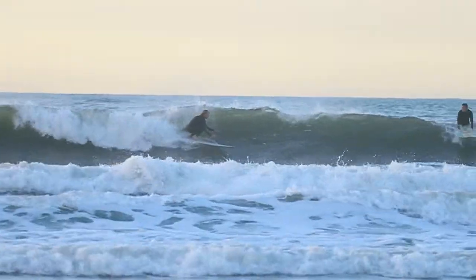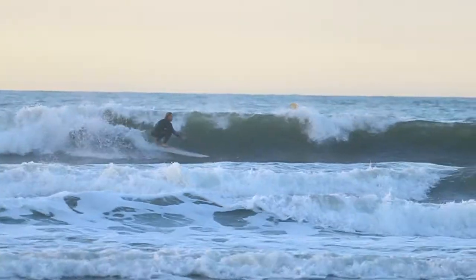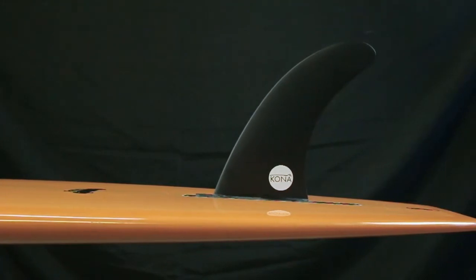The Cruiser has a low entry rocker that will give the rider that down the line speed he needs. The rails are 50-50 in the middle that transition to a pinched out rail in the tail.